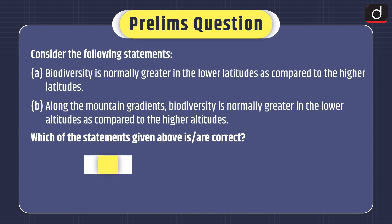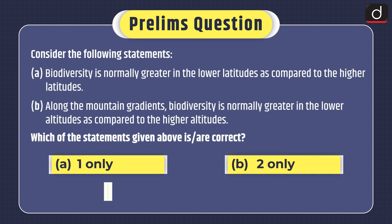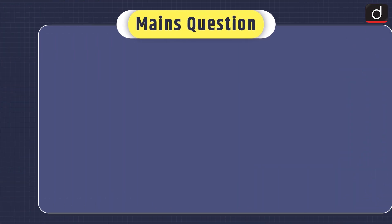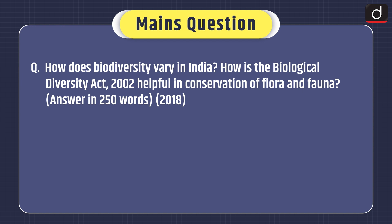Now it's time for practice questions. Prelims question — consider the following statements: 1. Biodiversity is normally greater in the lower latitudes as compared to the higher latitudes. 2. Along the mountain gradients, biodiversity is normally greater in the lower altitudes as compared to the higher altitudes. Which of the statements is or are correct? Options: 1 only, 2 only, both 1 and 2, or neither 1 nor 2. Mains question (asked in 2018): How does biodiversity vary in India? How is the Biological Diversity Act 2002 helpful in conservation of flora and fauna?